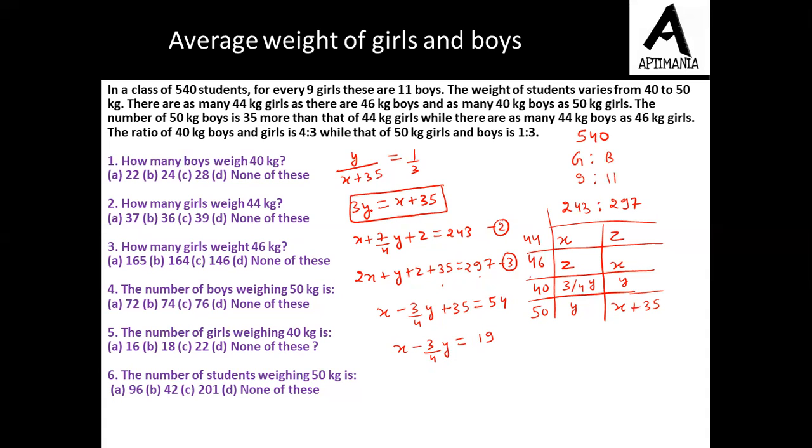And from here, if we substitute the value of x which is 3y minus 35, so 3y minus 35 minus 3 by 4 of y equals 19. This will become 12 minus 3 by 4 of y, so 9 by 4 of y. The value of y comes out to be 24. And if y is 24, we can easily find x as well. So x is 37.